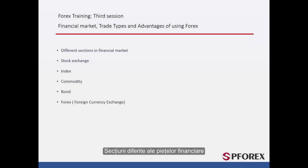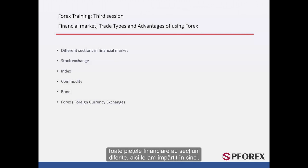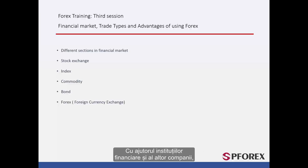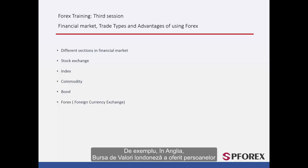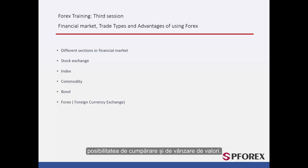All financial markets have different sections. Here we have broken it down into five. The first section is called a stock. With the help of financial institutions and other companies, people can either buy or sell these stocks all over the world. For example, in England, the London Stock Exchange has provided people with the chance of buying and selling stocks.